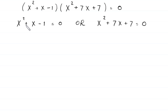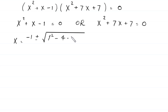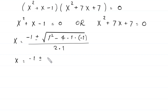First, we solve x squared plus x minus 1 equals 0. This is not factorable, so we use the quadratic formula. x equals negative b, which is 1, plus or minus the square root of b squared, which is 1 squared, minus 4 times a, which is 1, times c, which is negative 1, all divided by 2 times a, which is 1. This gives x equals negative 1 plus or minus the square root of 1 plus 4, which is 5, all over 2. So x₁ and x₂ equal negative 1 plus or minus root 5, over 2.